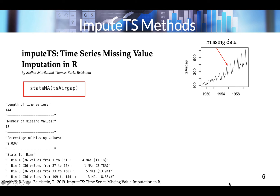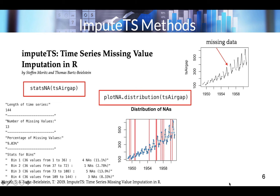The plotNA.distribution function visualizes the distribution of NAs in the time series using a standard time series plot, where areas with missing data are colored red. If you count those red lines, you'll notice we have 13 missing values. An overview of all available imputation algorithms can be found in the package description. Today we'll cover na.mean, na.locf, and you can explore other functions on your own.